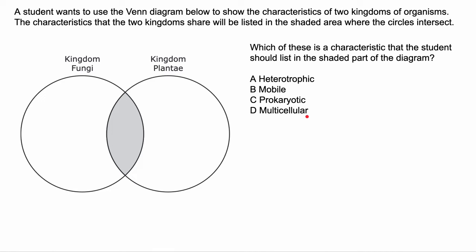Look at that chart on your sheet and try to figure out what is something that the kingdom of Fungi and the kingdom of Plantae share from these four. Heterotrophic means that you need to eat other things for energy. Fungi are heterotrophic — they consume dead, decaying things. But plants are not heterotrophs. Plants are autotrophs; they use the sun to make their food, or glucose.